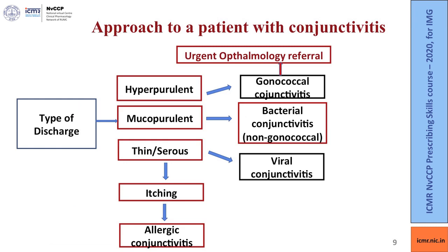The type of discharge from the eyes can help you decide which kind of conjunctivitis it is. If it is a hyperpurulent discharge — a copious thick pus-like discharge — you could be looking at a case of gonococcal conjunctivitis, which should be referred to an eye specialist urgently. If it is a mucopurulent discharge, this could be due to non-gonococcal bacterial conjunctivitis. A thin serous discharge without itching is likely due to viral conjunctivitis, while the presence of itching along with a thin serous discharge points towards a diagnosis of allergic conjunctivitis.